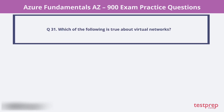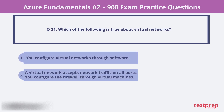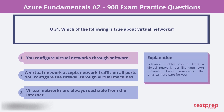Question 31. Which of the following is true about virtual networks? 1. You configure virtual networks through software. 2. A virtual network accepts network traffic on all ports. You configure the firewall through virtual machines. 3. Virtual networks are always reachable from the internet. The correct answer is 1. You configure virtual networks through software. Software enables you to treat a virtual network just like your own network. Azure maintains the physical hardware for you.